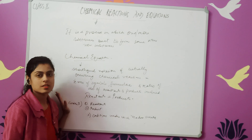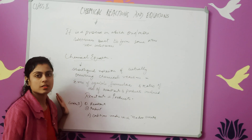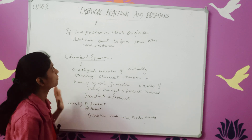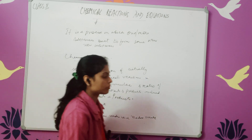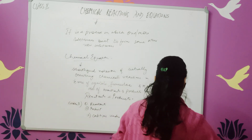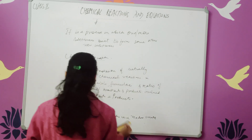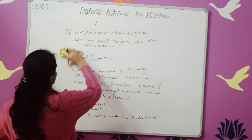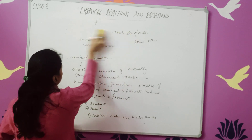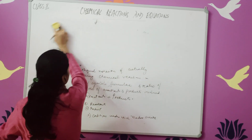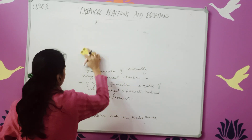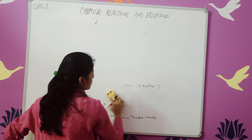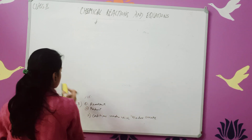In chemistry you have to learn the symbols, formulas, and many other things. Next, there are 4 types of chemical reactions.